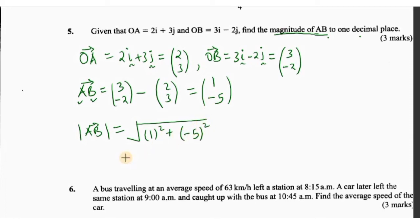This should be the square root of 1 squared, which is 1, plus negative 5 squared, that is 25, and that will give us the square root of 26, which is approximately 5.1.